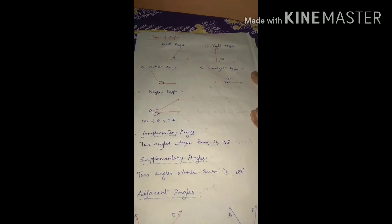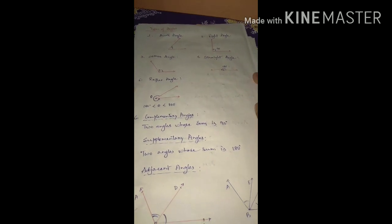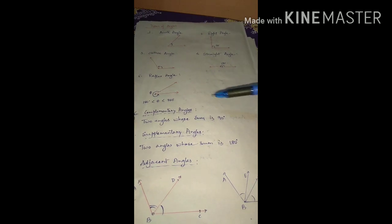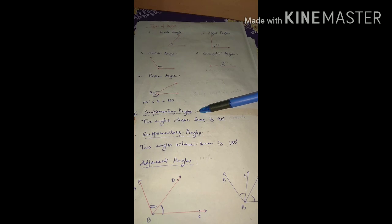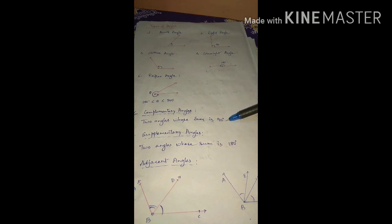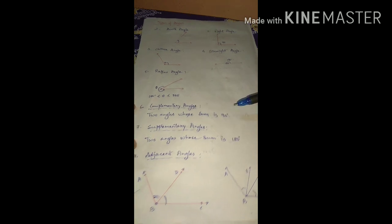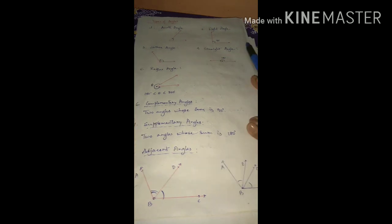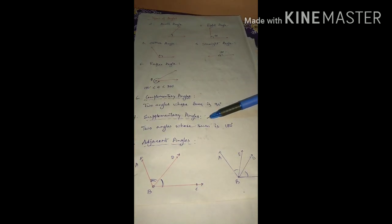Next, number six: complementary angles. Complementary angles means if you add two angles and their sum is exactly 90 degrees — remember, exactly 90 degrees — then those two angles are known as complementary angles.